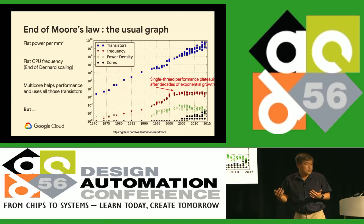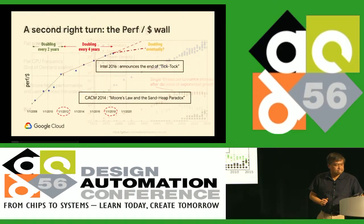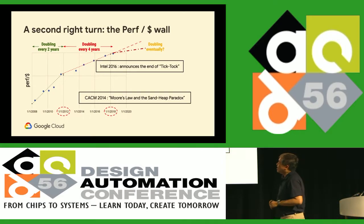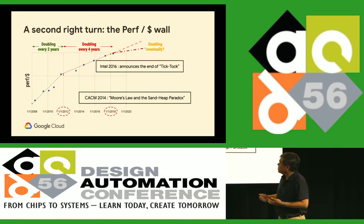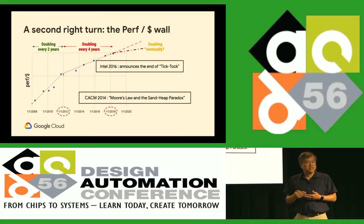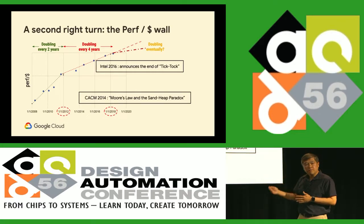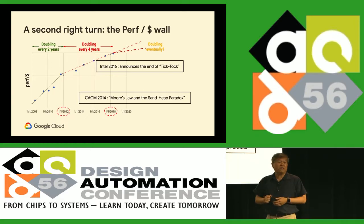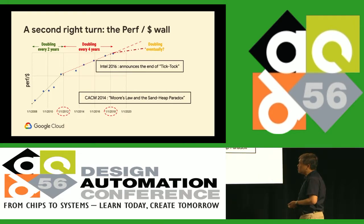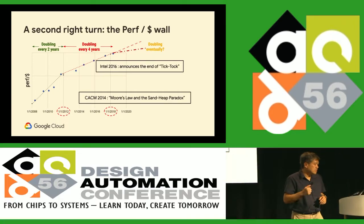This plateauing hurts performance. From an infrastructure viewpoint, one of the key metrics we look at is performance per cost — performance per dollar. This has hit a similar wall in the intervening years. We used to get a Moore's Law effect, doubling performance per dollar spent on compute infrastructure every two years. This started slowing down in 2012 — we were doubling only every four years. And as of recently, that's plateauing pretty severely, which is a big deal for infrastructure companies such as Google.